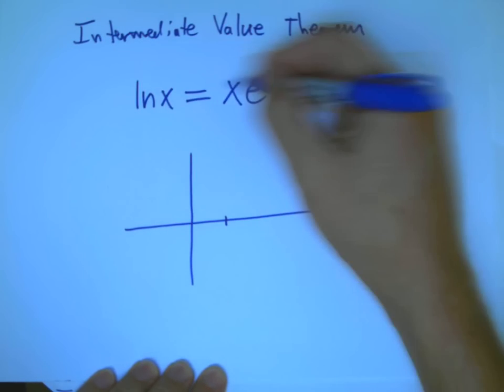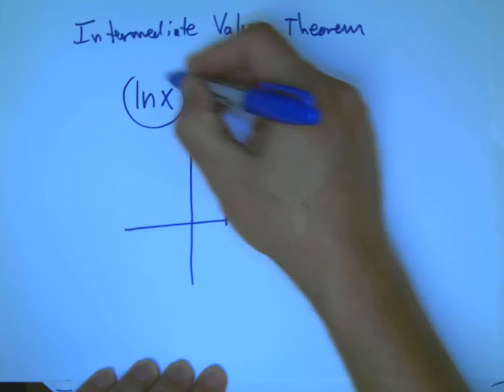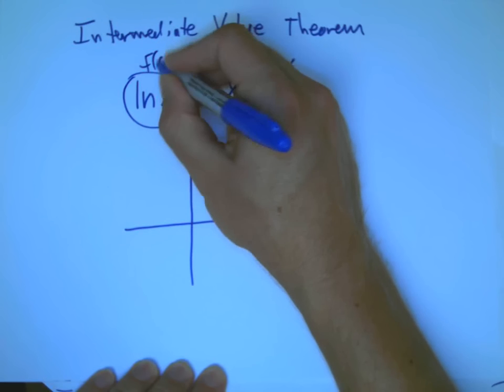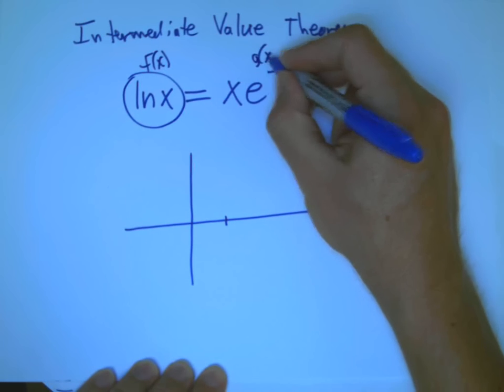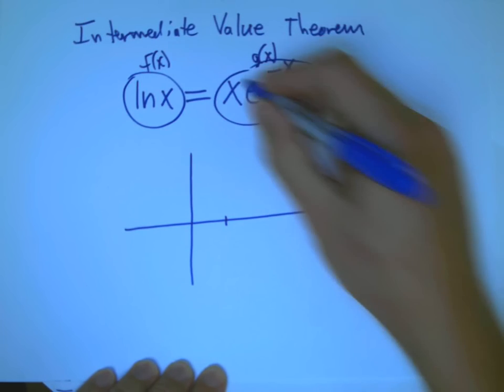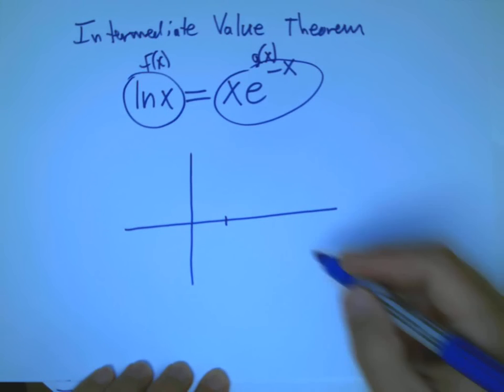Now I'm going to graph, in order to figure out if two things are equal, one way to do that is to graph this one. Let's call that f of x. And this one, let's call it g of x. Graph them and see where they intersect.